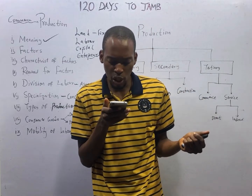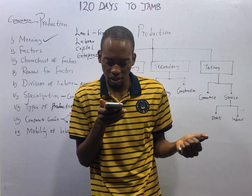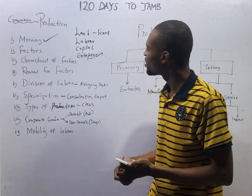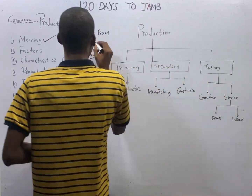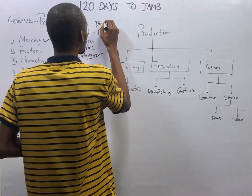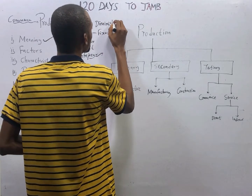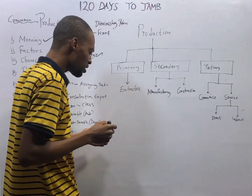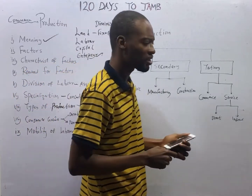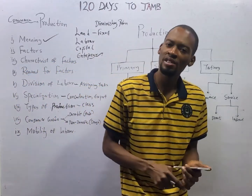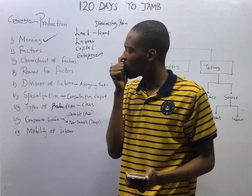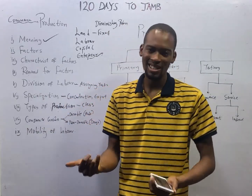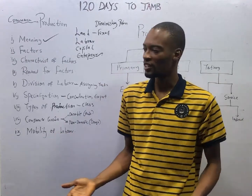Land is subject to the law of diminishing returns. The law of diminishing returns states that the more of something you have, the less satisfaction you derive from that thing.